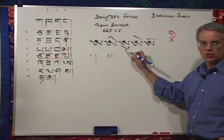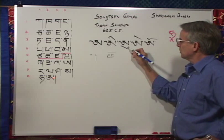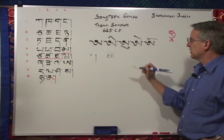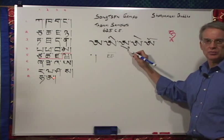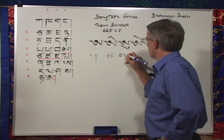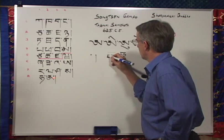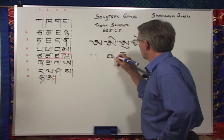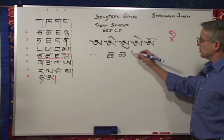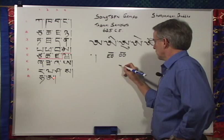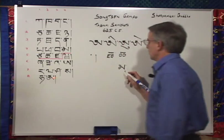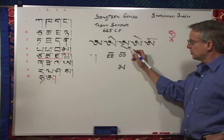The next vowel sign is called a shab-q. It's made in one motion from the top, around the hook, and back to the top left. This vowel sign is called a shab-q — that's the name of the sign. The sound that it makes is oo, the long oo as in moon. For instance, if we took the fourth letter in the fourth row, the ma, and put a shab-q on it, we would change the sound from ma to mu.